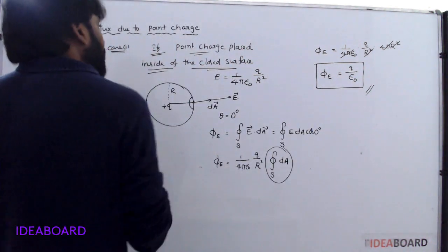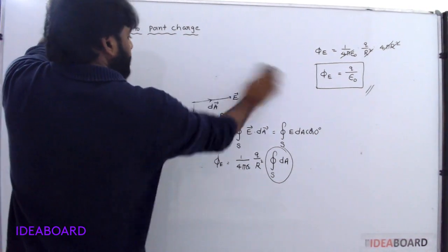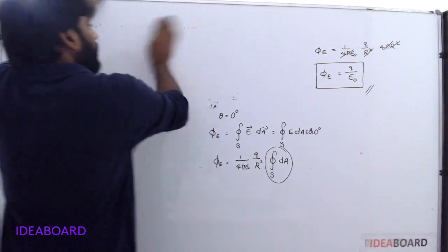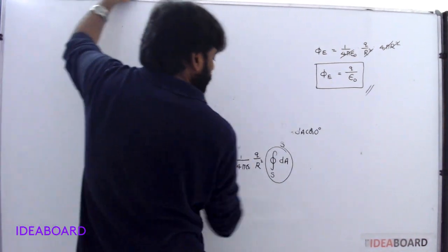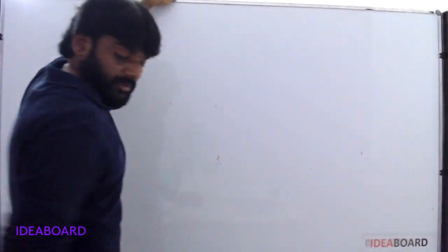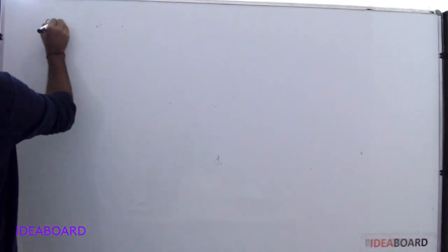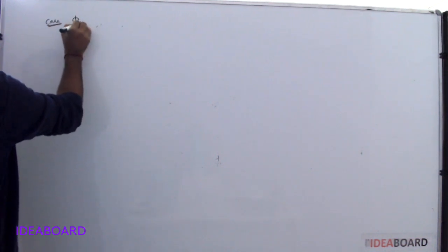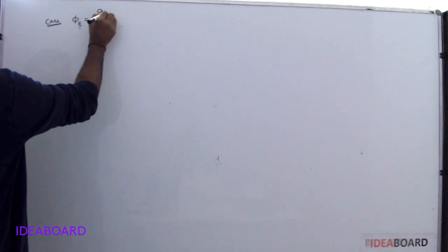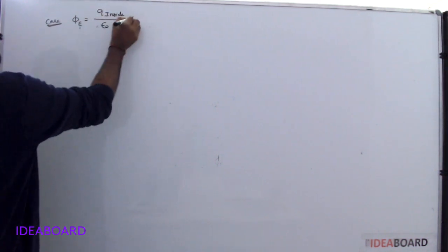Next case: if the point charge is placed outside of the closed surface. From the first case, flux is equal to Q inside by epsilon naught.